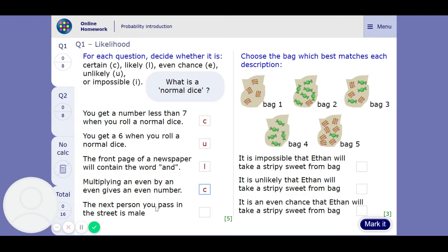The next person to pass you in the street is male. Well, generally they're going to be either male or female, so it seems like it's an even chance to me, so we'll go E. Next one.